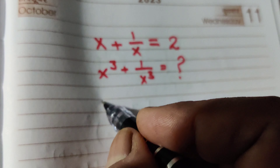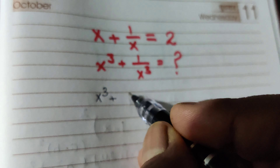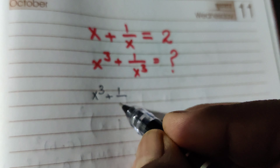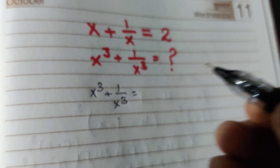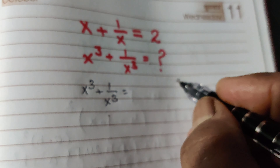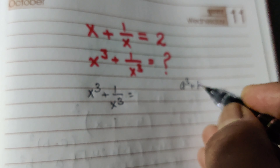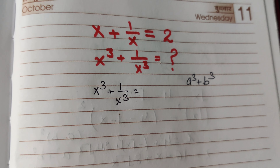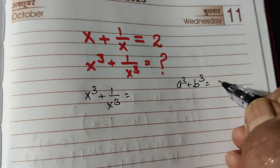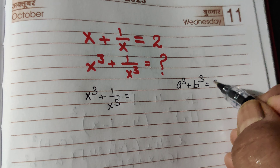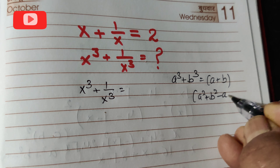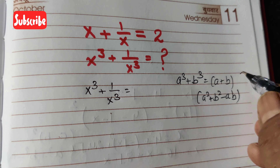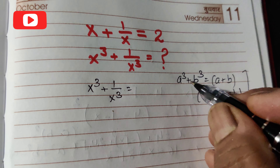We know that x cube plus 1 by x cube can be explained by the formula of a cube plus b cube. The identity is: a cube plus b cube equals a plus b, multiplied by a square plus b square minus ab.